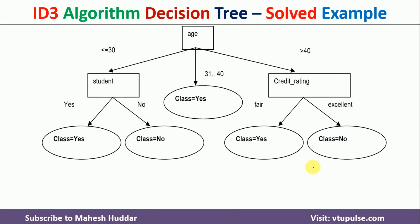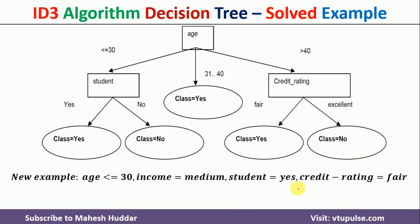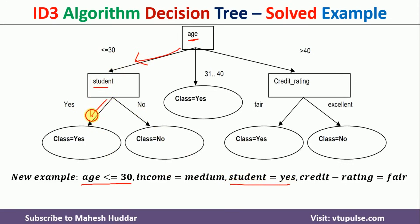Finally, given the new example, we classify it using the tree. Starting at the root node — age — the value is less than or equal to 30, so we go to the left branch. The next question is about student: the student value is yes, so we follow the yes branch, and we get the class label yes. That is the predicted label for the given new example.